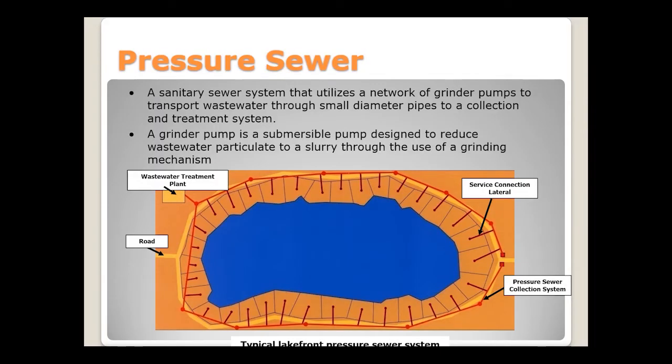On this slide you'll see a typical layout of a pressure sewer. By definition, a pressure sewer is a sanitary sewer system that utilizes a network of grinder pumps to transport wastewater through small diameter pipes into a collection system for treatment. Each node in the diagram represents a grinder station. The grinder pump is a submersible pump designed to reduce wastewater from the home into a fine slurry, which is then pumped through an inch-and-a-quarter pipe into the service collection lateral and then into the service main.